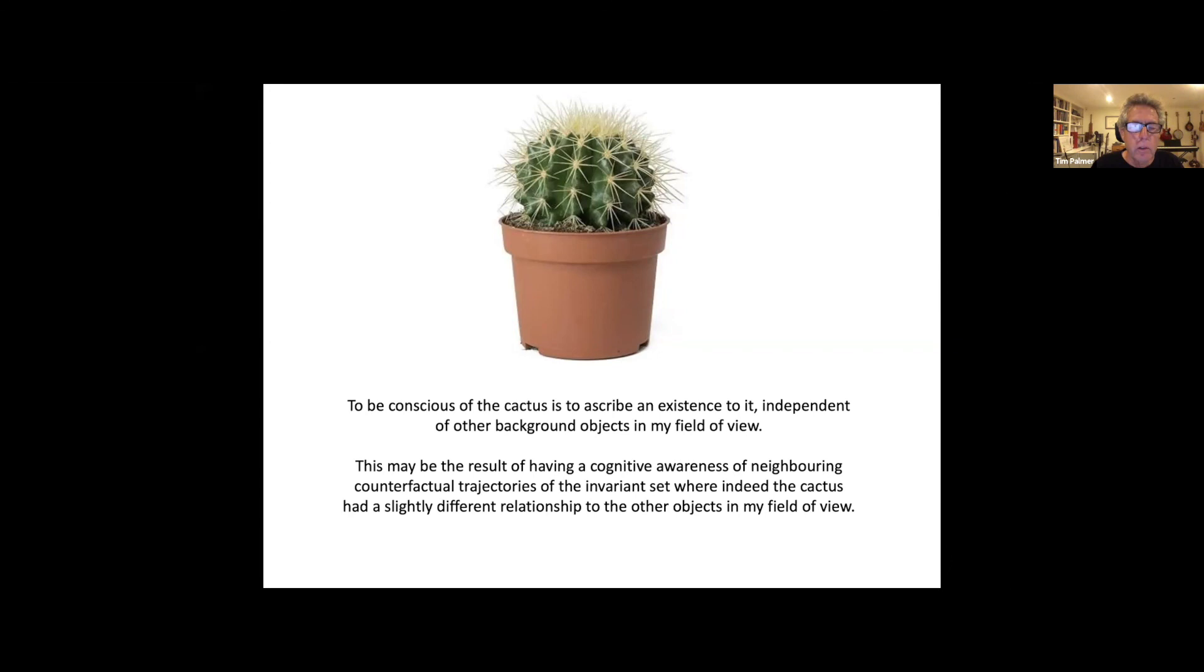Maybe this cognitive awareness of the cactus as an independent object, independent of other objects, is also a consequence of this proposal I'm making of a cognitive awareness of neighboring counterfactual trajectories on the invariant set. Because in these neighboring trajectories, indeed, the cactus would have a slightly different relationship to the other objects in my field of view. So it is that a cognitive awareness of the neighboring counterfactual trajectories on the invariant set gives me this feeling of objects in the world having an independent existence to other objects, which I would view as being an essential part of being conscious of these objects.